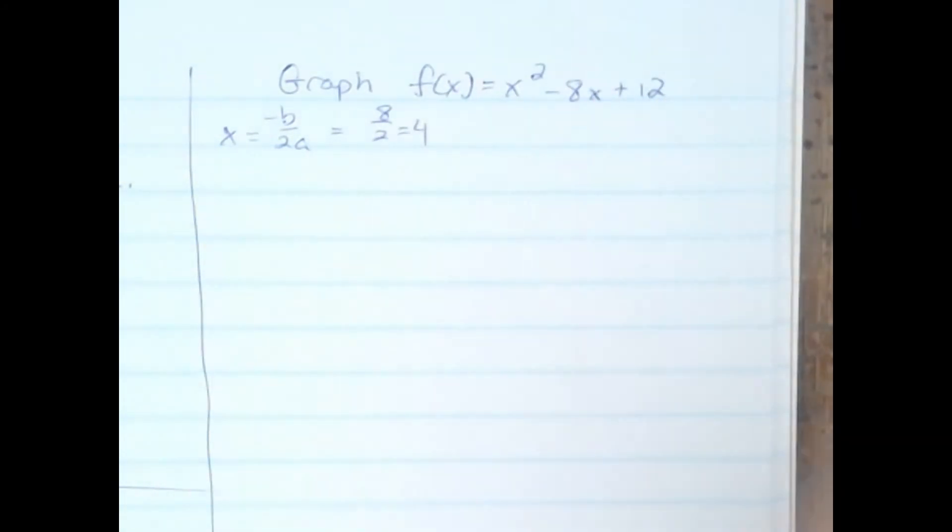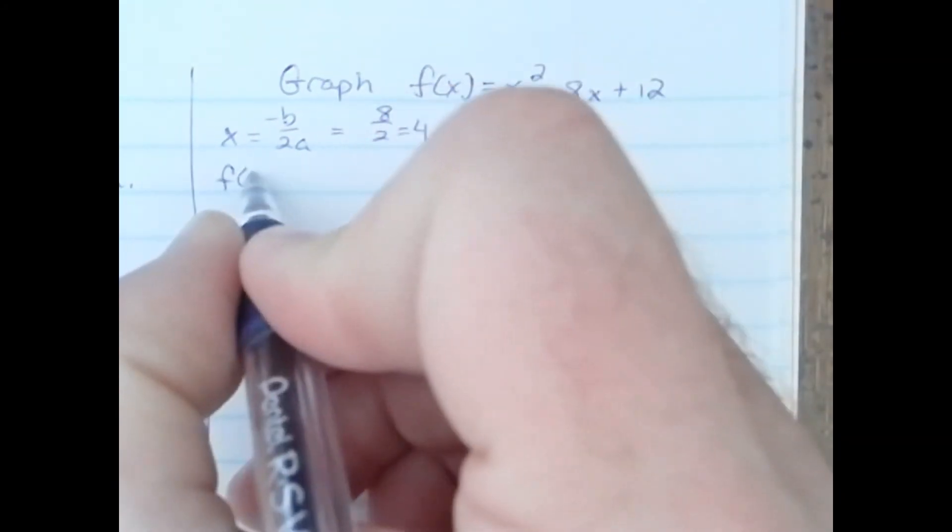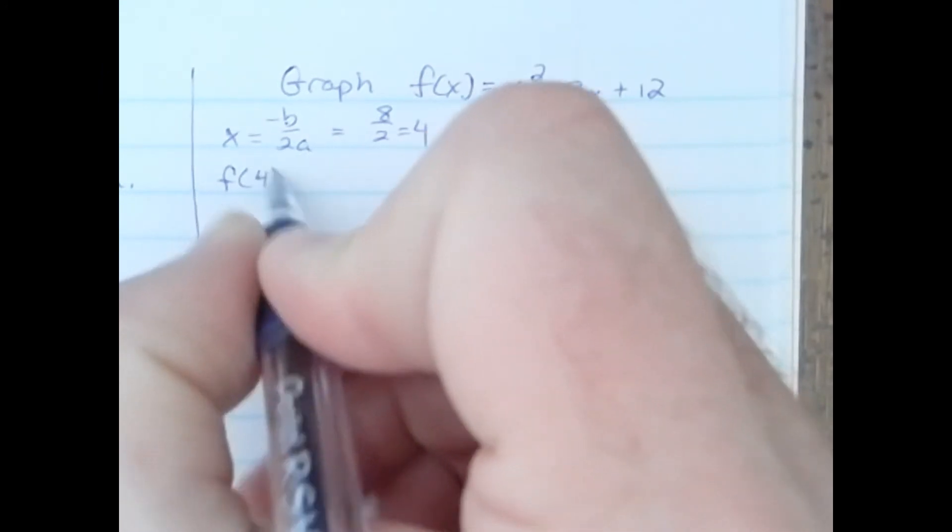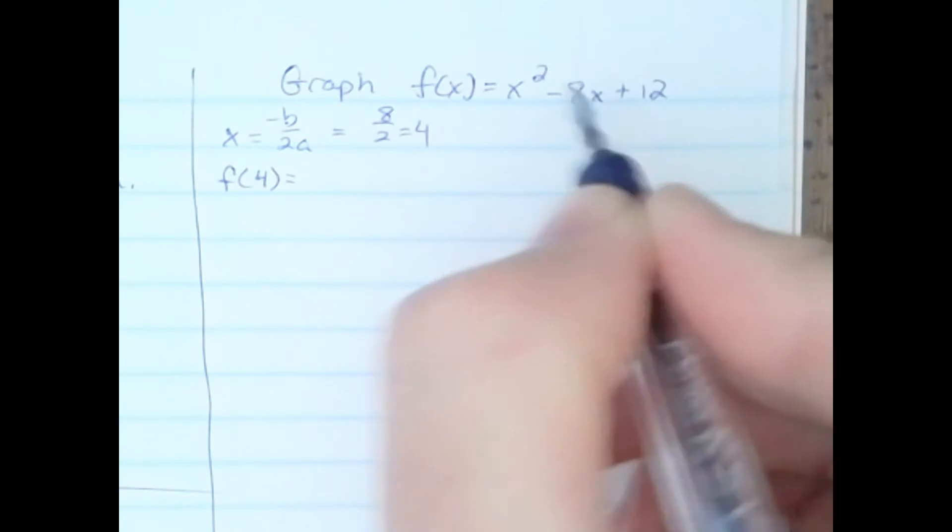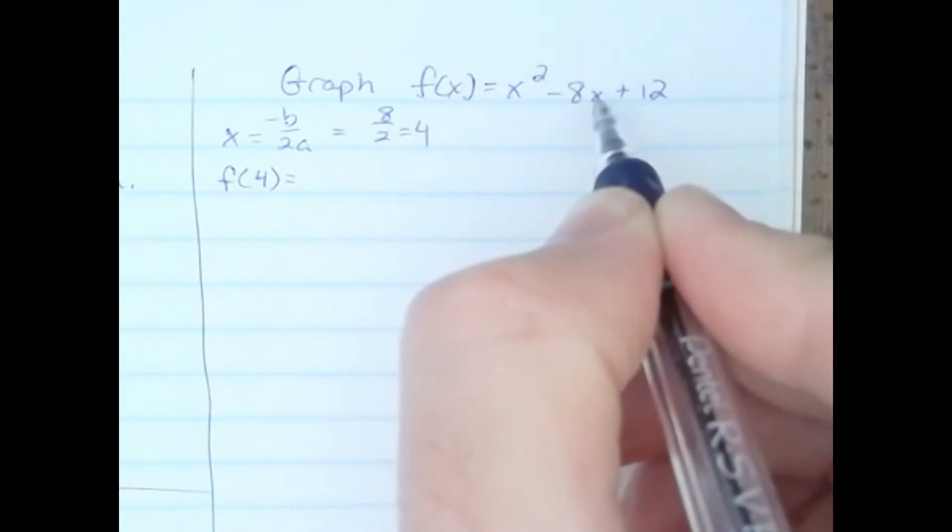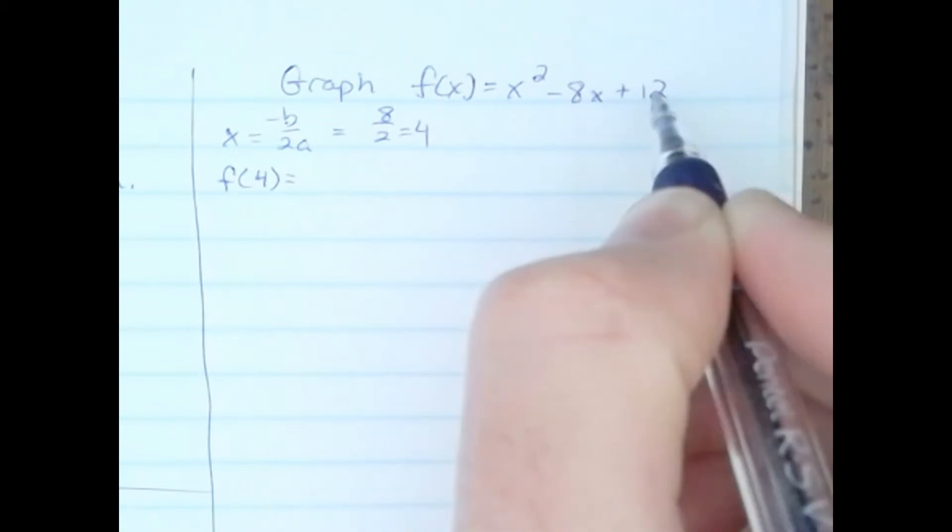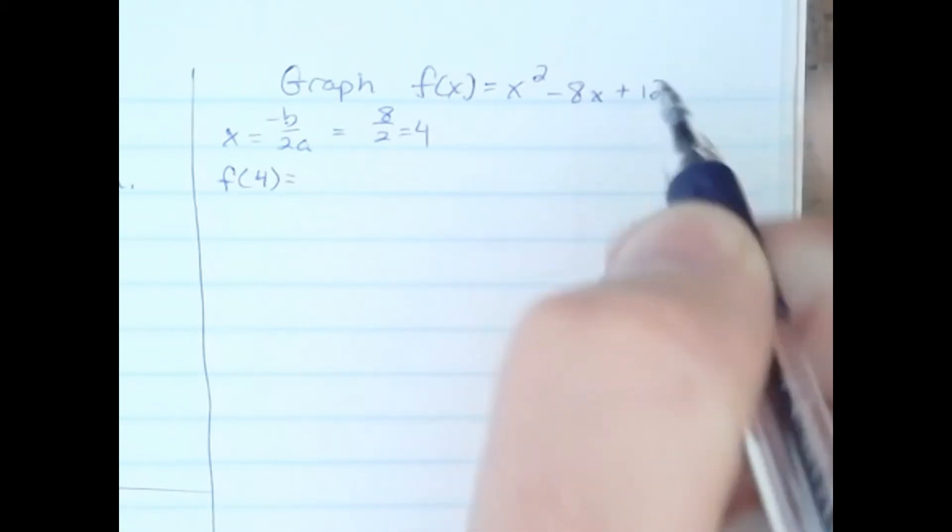The x-coordinate of the vertex is 4. Let's find the y-coordinate. 4 squared is 16, 8 times 4 is 32, so if I do 16 minus 32 I get negative 16, and if I add 12 to that I will get negative 4.